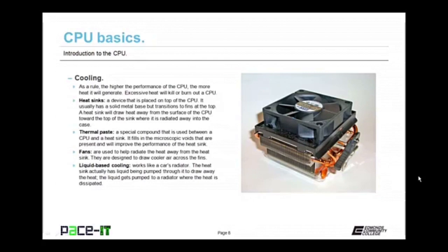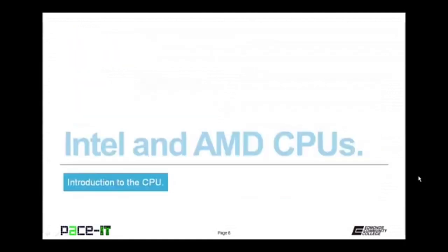Fans are used to help radiate the heat away from the heat sink — designed to draw cooler air across the fins, transferring the heat away. And finally, there's liquid-based cooling, which works kind of like a car's radiator. The heat sink has liquid being pumped through it to draw heat away from the CPU, and the liquid gets pumped to a radiator where the heat is dissipated.